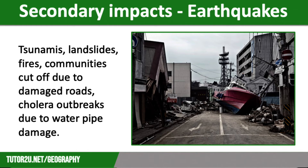For example, damage to road infrastructure would be a primary impact, and as a result there would be a secondary impact of communities being cut off. Damage to water pipes would be a primary impact which could lead to outbreaks of cholera as a secondary impact — this was a major cause of loss of life in the devastating Haiti earthquake in 2010. Damage to electricity cables would be a primary impact, which could lead to fires and power cuts as a secondary impact.